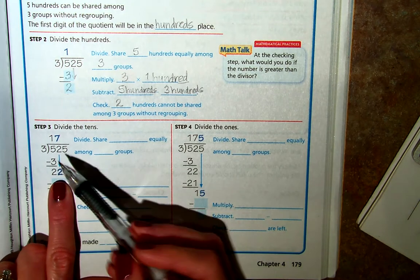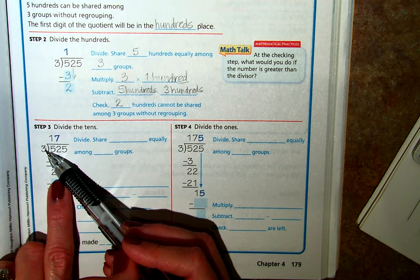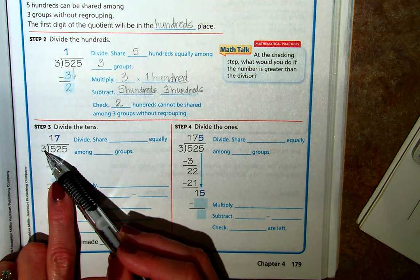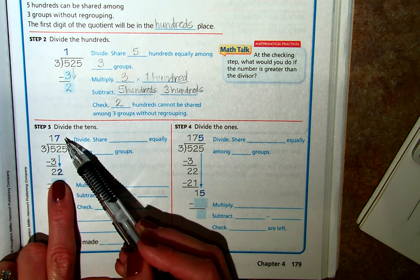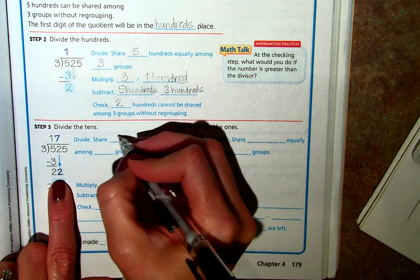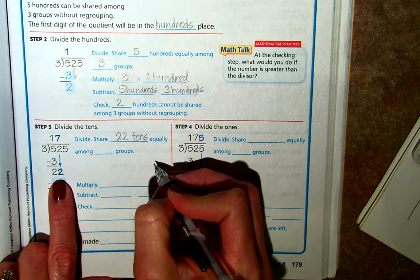So do we know a number that can be multiplied by 3 to get 22, or close to it? And so we know that one of the factors of 3 is 7.